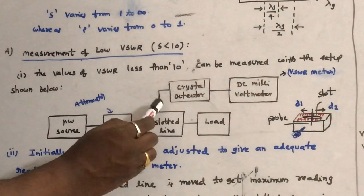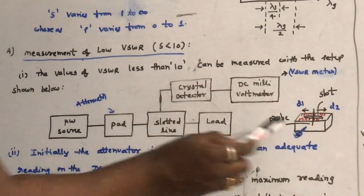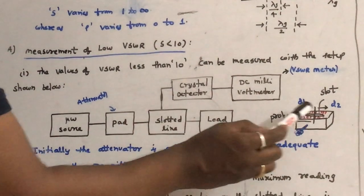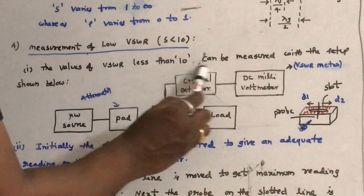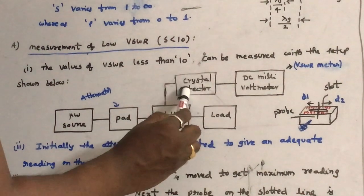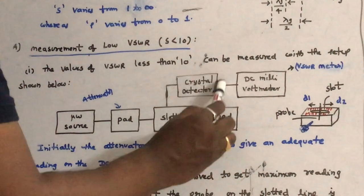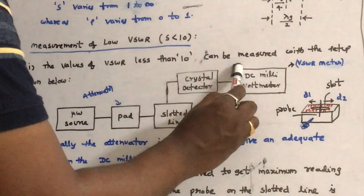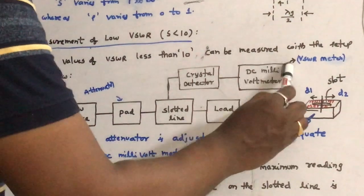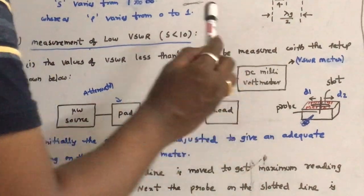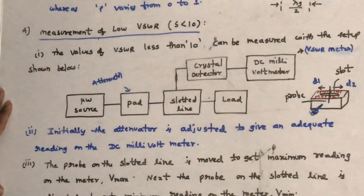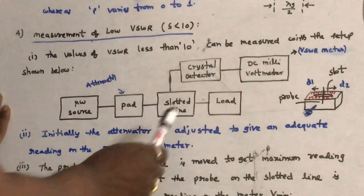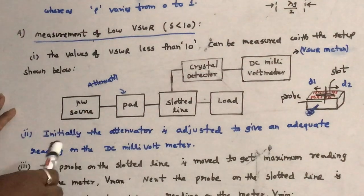The probe of the slotted line is connected to the crystal detector. The crystal detector is finally connected to the DC millivoltmeter.